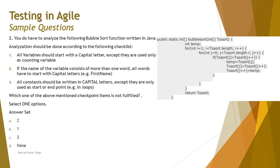You have to analyze the following bubble sort function written in Java according to a checklist. Number one: all variables should start with a capital letter except when used only as a counting variable. Number two: if the name of a variable consists of more than one word, all words have to start with a capital letter — for example, 'FirstName' where F and N are capital. Number three: all constants should be written in capital letters except when only used as start or end points, for example in loops.